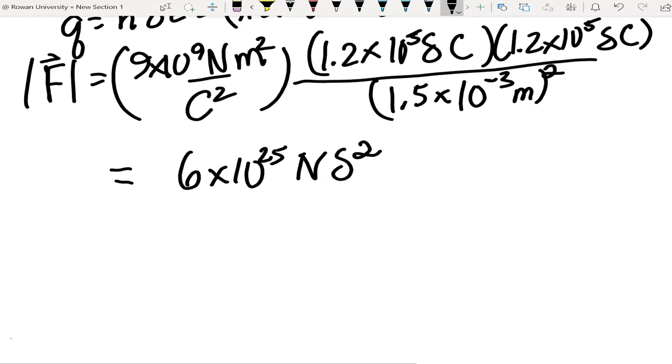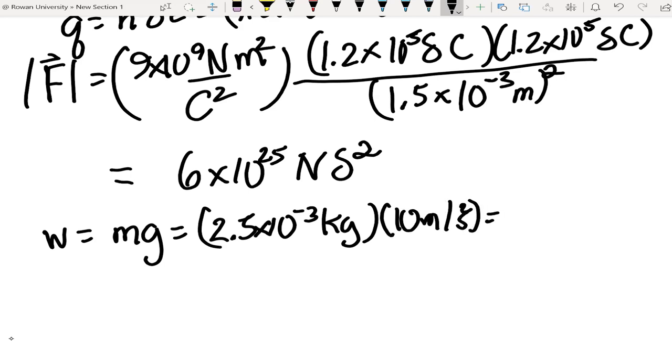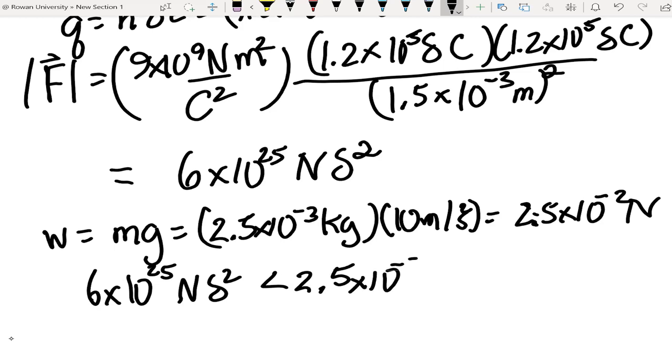Now, we know that these two pennies are resting on top of each other. So that means that the repulsive force from these two sets of pennies has to be less than the weight of this penny. So the weight of the top penny is just mg. So that's 2.5 times 10 to the minus 3 kilograms times 10 meters per second squared, which is 2.5 times 10 to the minus 2 newtons. And so this force, 6 times 10 to the 25 newtons delta squared, which is the force pushing the pennies apart, has to be less than 2.5 times 10 to the minus 2 newtons.